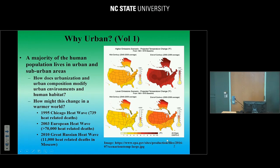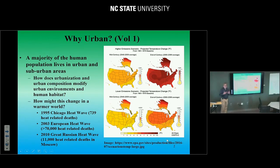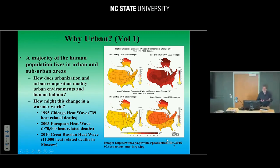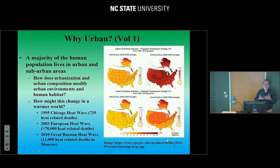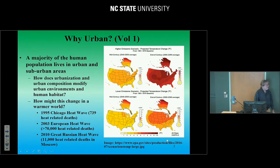It's the way urban environments are designed — what they're made of, their composition, their arrangement — these have a huge impact on the environments we experience. What we really want to start thinking about is how we can make urban environments more conducive to humans. One thing that motivates me in particular is how these environments might respond to global climate change. Think about 1995 — the Chicago heatwave, 739 people died. In 2003, the European heatwave, 70,000 people had heat-related mortality events. And in 2010, the great Russian heatwave, 11,000 people in Moscow alone.